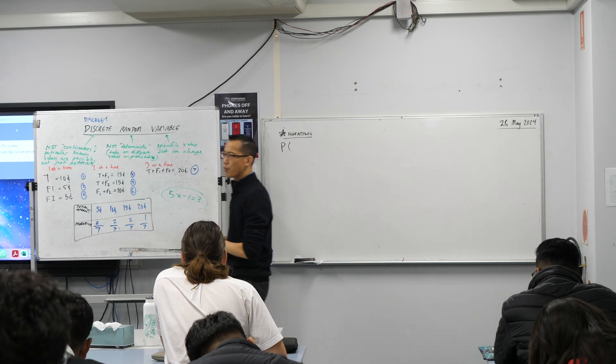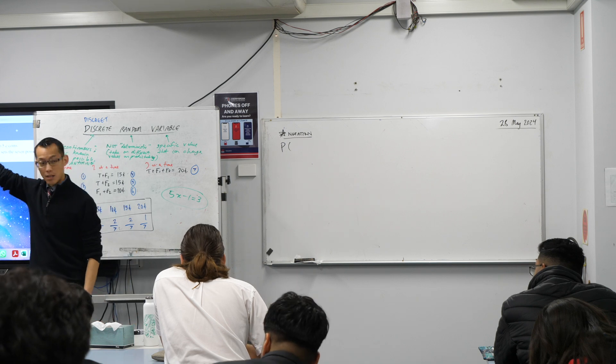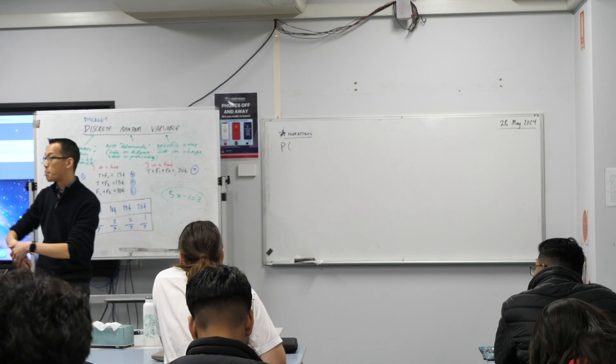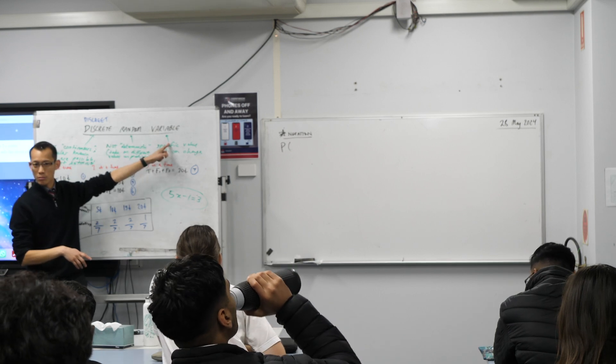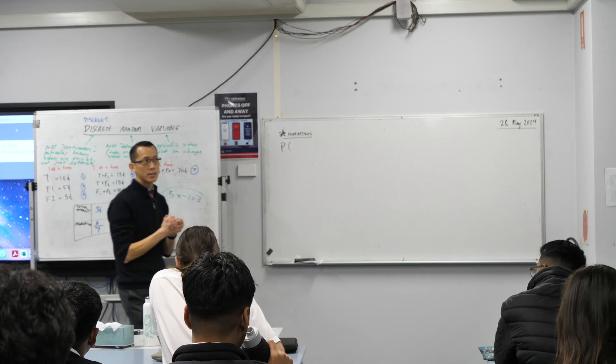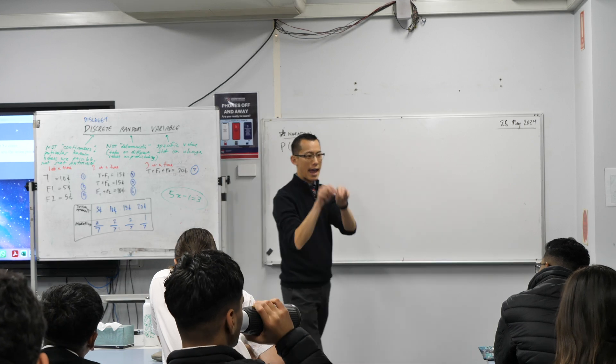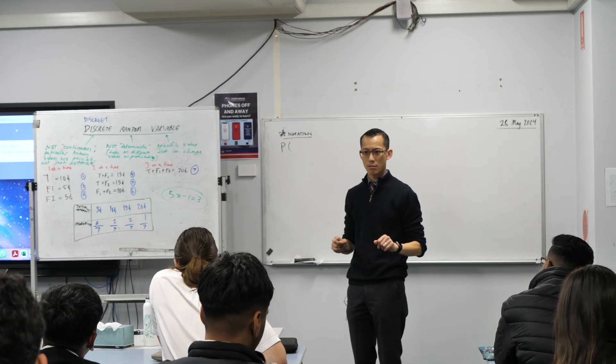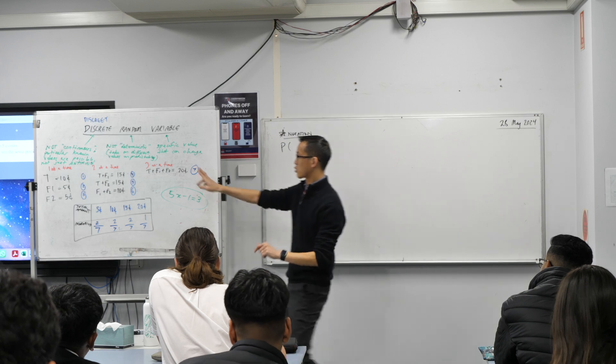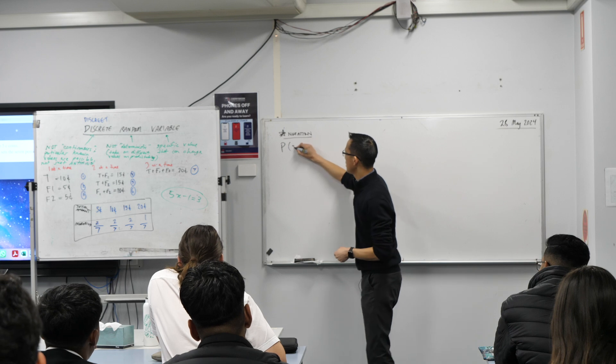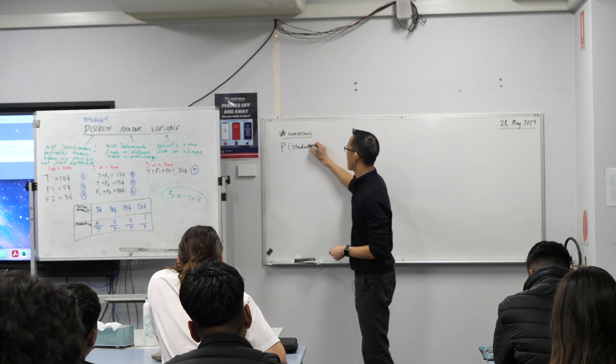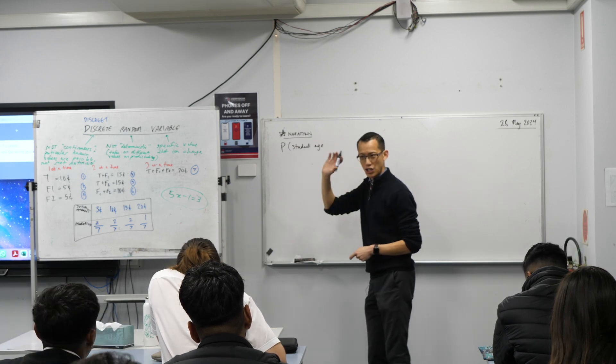So for example, if we said, let's go out into the playground at recess and pick a random student, we might say a discrete random variable might be, for instance, the student's age in years. I'll say that one more time, right? The discrete random variable, I'm specifying it as the student's age in years. Why do you think I might be specifying years?